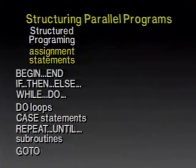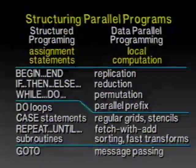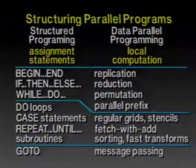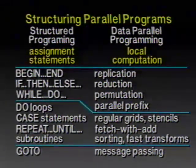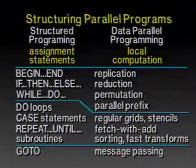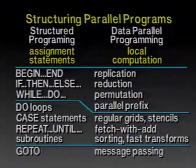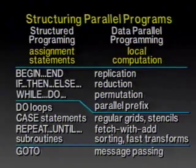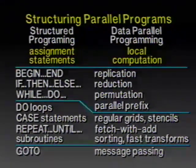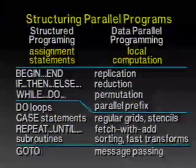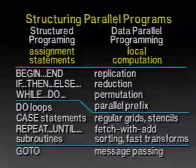I've given you this big spiel about structured programming because I want to make the analogy to data parallel programming. In data parallel programming, there are also things to be structured — the local computations — and what is being structured is not flow of control but flow of data, structuring communications among the processors. The proposal is that there is a standard set of primitives that seem to capture most of the kinds of communication that happen in most parallel programs, and these fall into the general categories of replication, reduction, permutation, and parallel prefix.